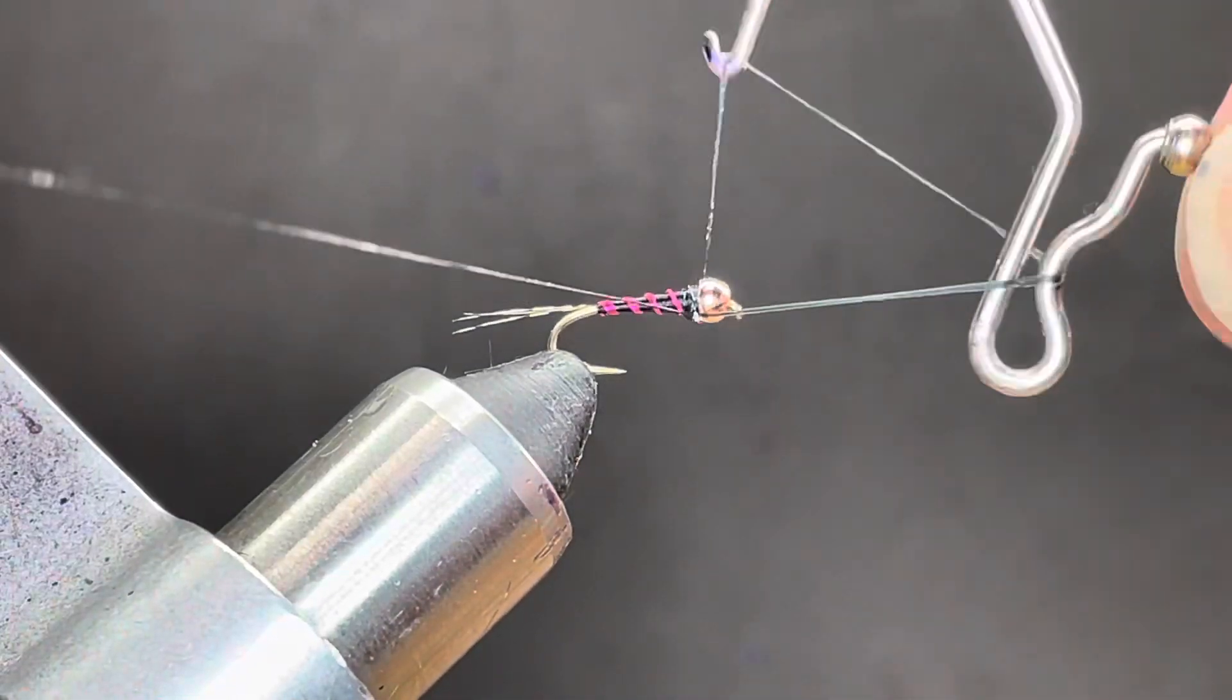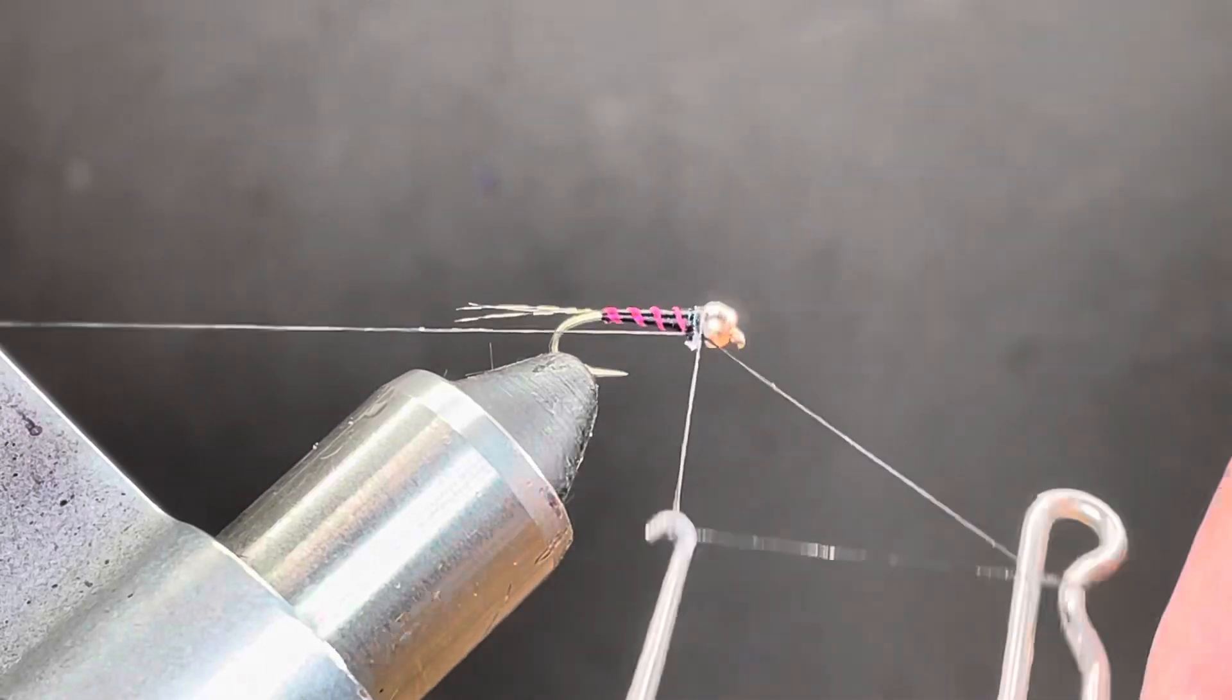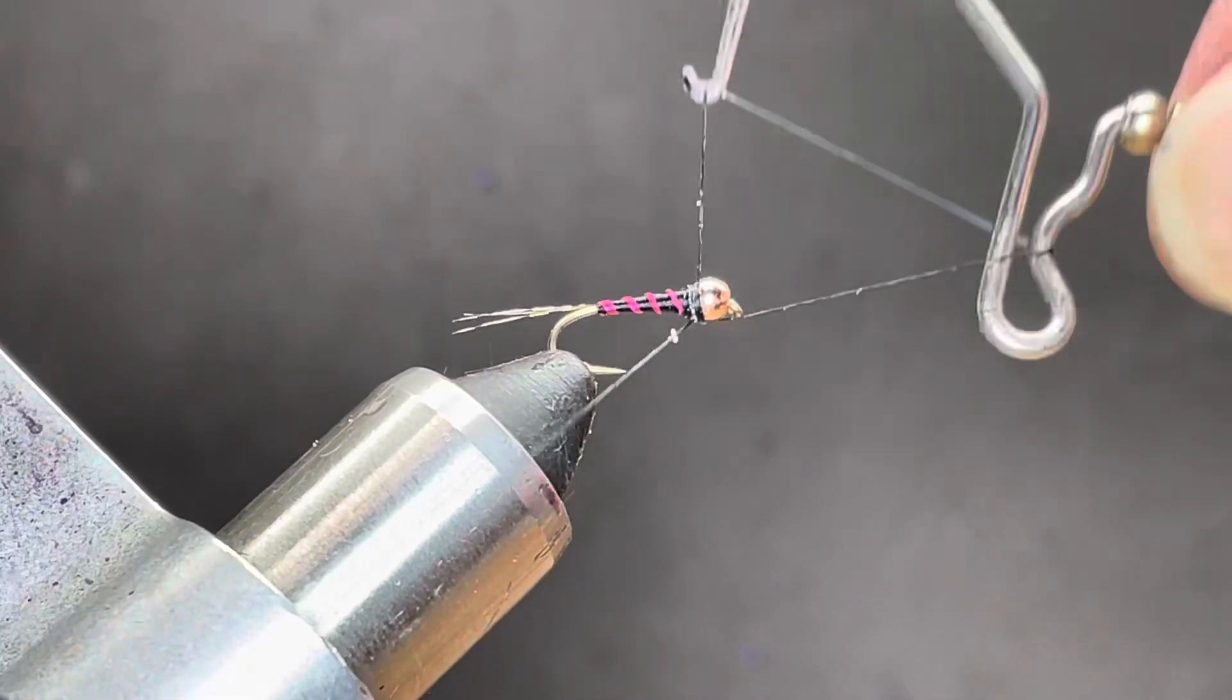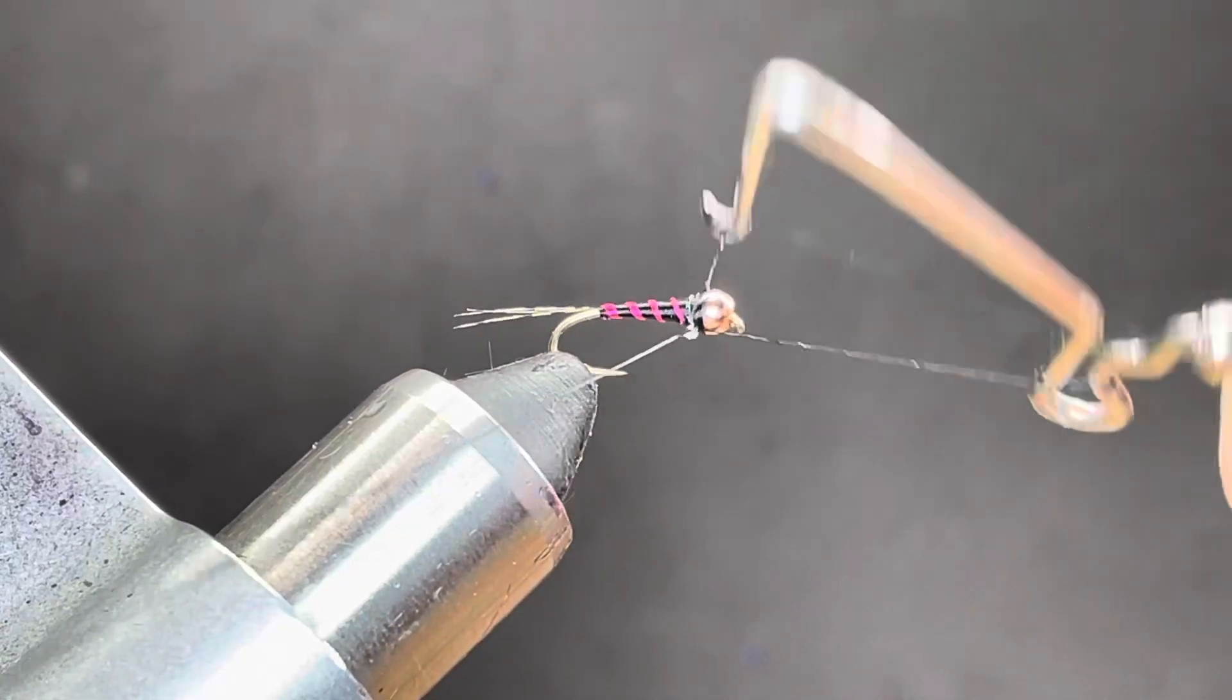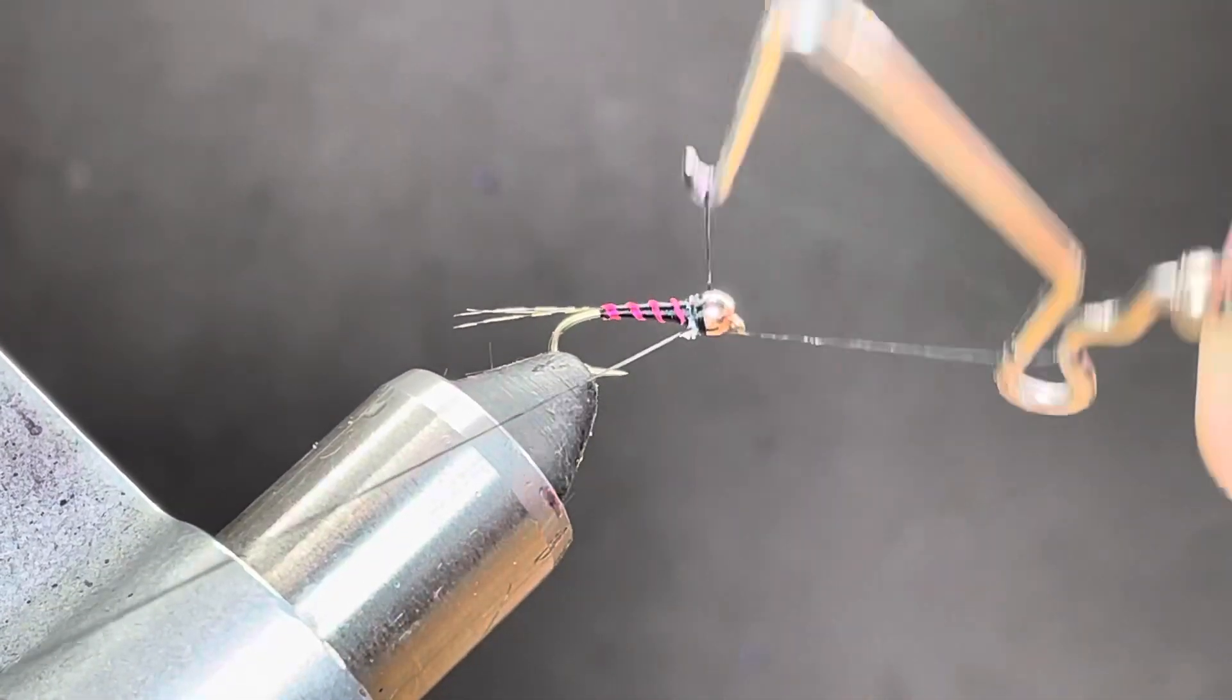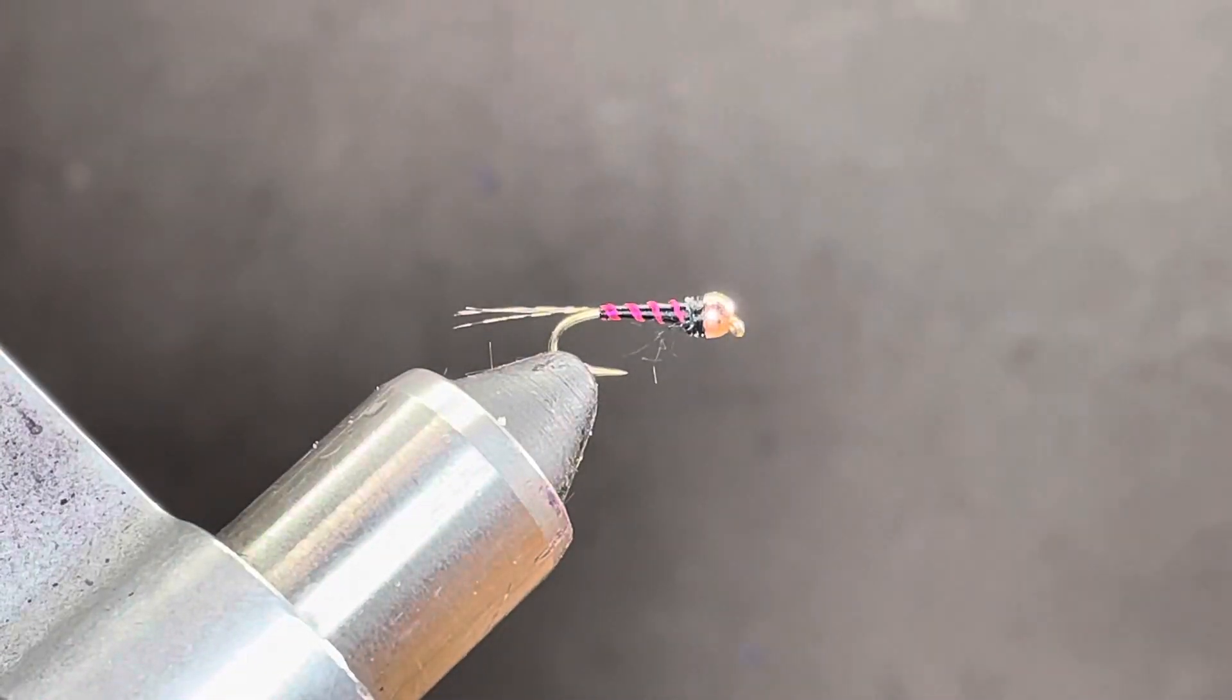So, next I'll start my whip finish. Just kind of fill on the back of the gap on the bead. A little white stuff you see coming off is just wax from pre-wax thread. And I'll pull forward to snap it.